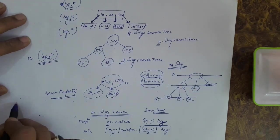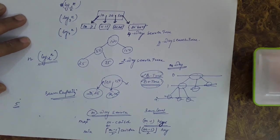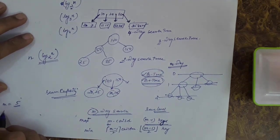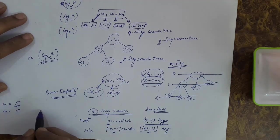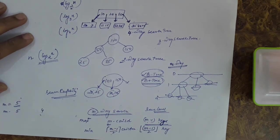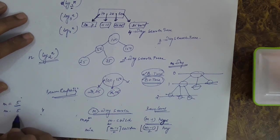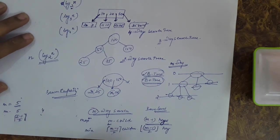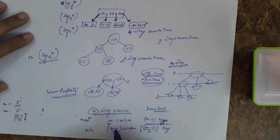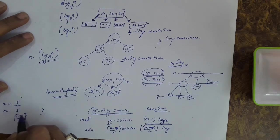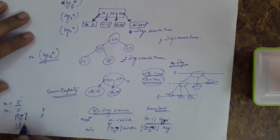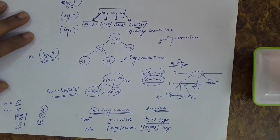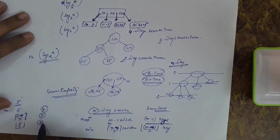For example, if the order m is 5, the maximum number of children allowed is 5 and the maximum number of keys is 4. The minimum number of children is ⌈m/2⌉ = ⌈5/2⌉ = 3, and the minimum number of keys is ⌊m/2⌋ = 2. So for order 5, maximum keys = 4 and minimum keys = 2.